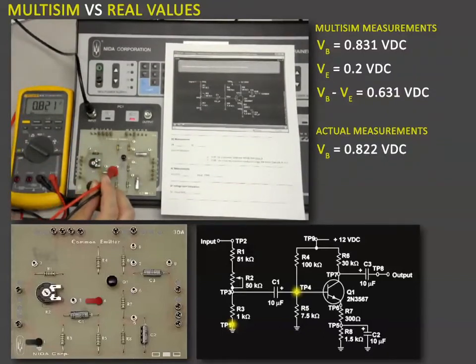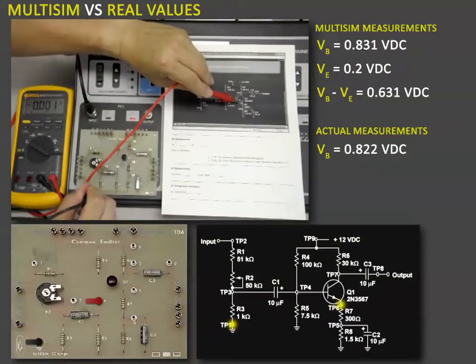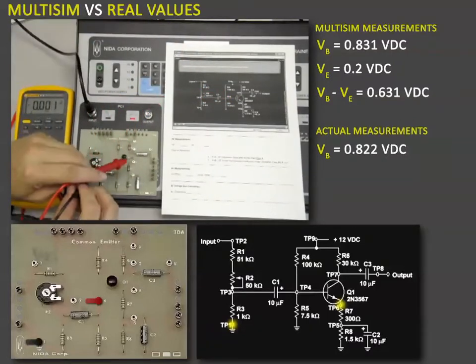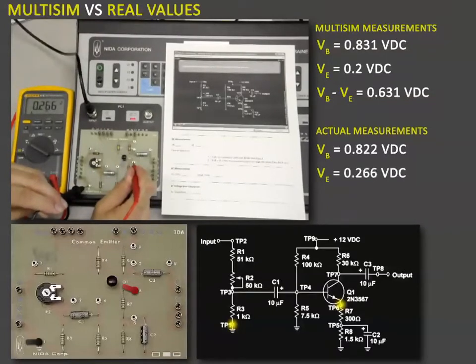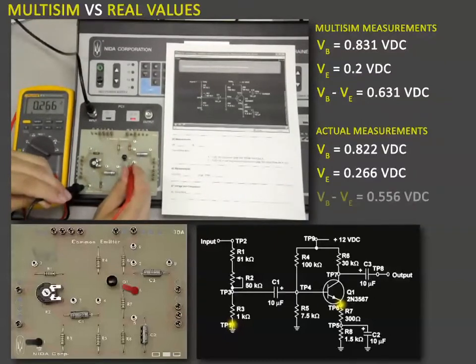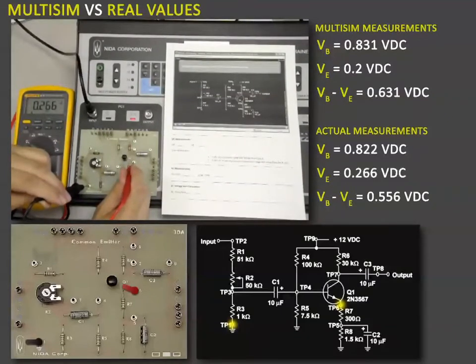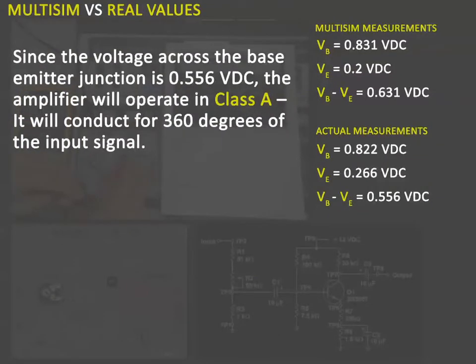The voltage on the emitter is a test point six. So VE is a test point six, which is right here. So I'll make that measurement. And we have point two six six volts. On Multisim, we measured point two volts. So again, they're very similar. And if we subtract the two voltages, we should get somewhere between point five and point eight volts, somewhere right in the middle of that as close as possible, which will tell us that it's class A operation. On Multisim, it came up to point six three one volts. Here, we need to make a calculation.